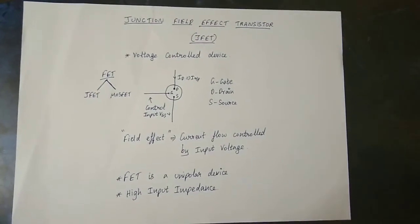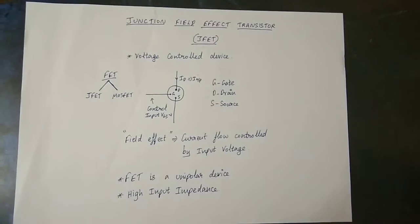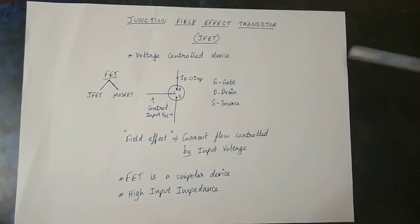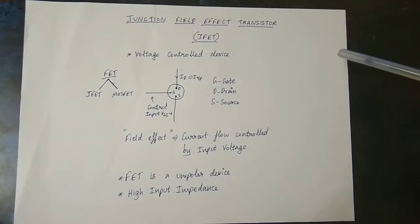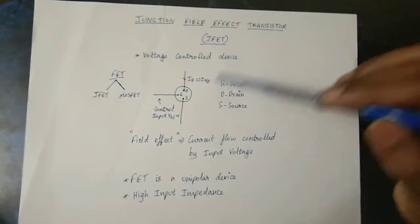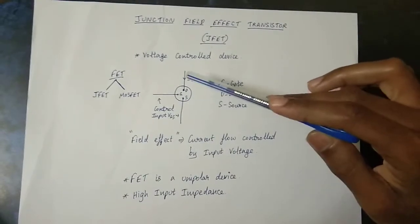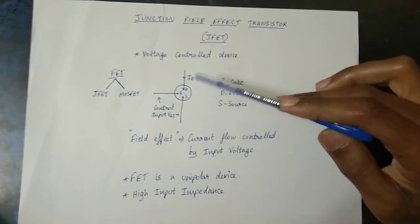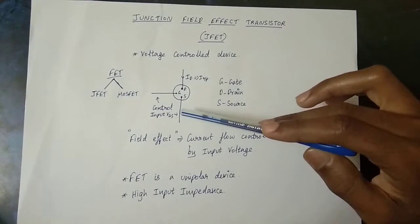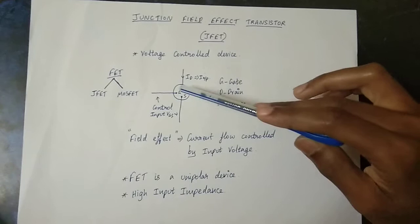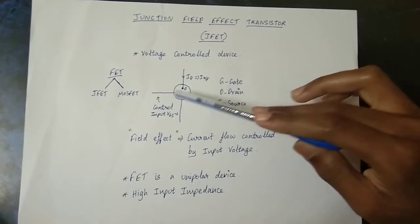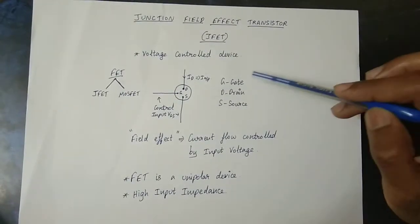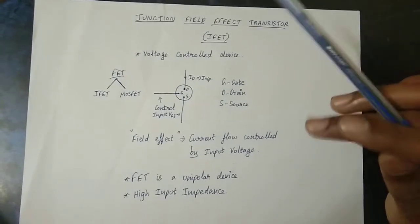This is the introduction of JFET. If you look at the structure, there are three terminals. The output is the drain current. The input is the gate voltage. The three terminals are called G (Gate), D (Drain), and S (Source).